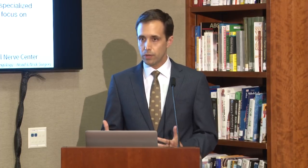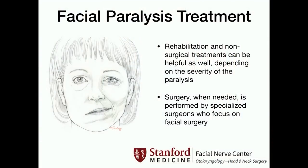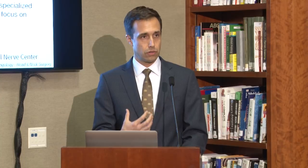The treatment of facial paralysis falls into two broad categories. On one hand, we have rehabilitative and non-surgical treatments — ways of relearning or retraining some movement that persists in the face, as well as some non-surgical treatments that can be offered in clinic. The other arm of treatment is surgical, and that's when needed and appropriate, sought out by surgeons like myself who specialize in surgical treatment of the paralyzed face.